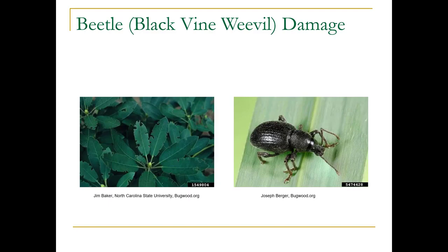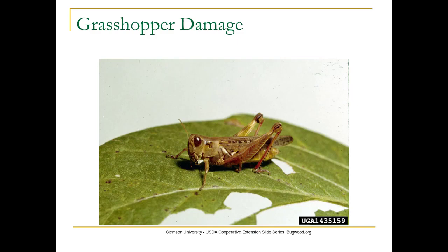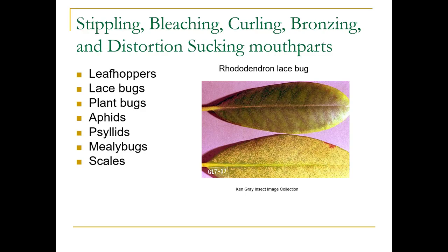Here's a red-legged grasshopper, mostly on the east side of the mountains, but you will see them here on this side too. Other damage you might see includes stippling, bleaching, curling, bronzing, and distortion. This is a rhododendron lace bug, and you can see on that bottom leaf that's what stippling is — just these little specks. It looks like little white or yellow dots.